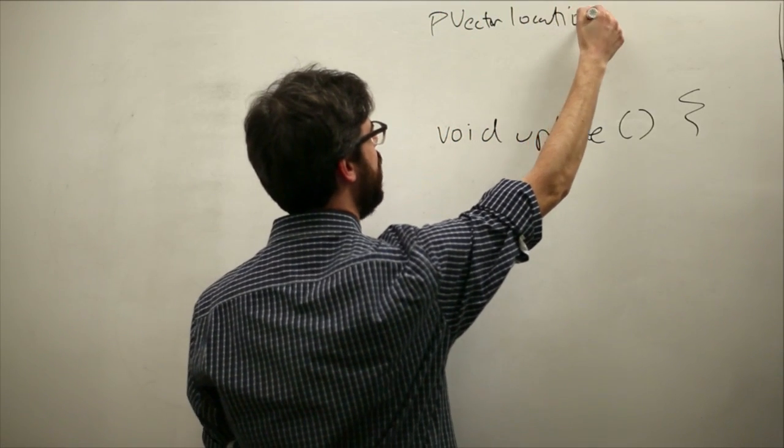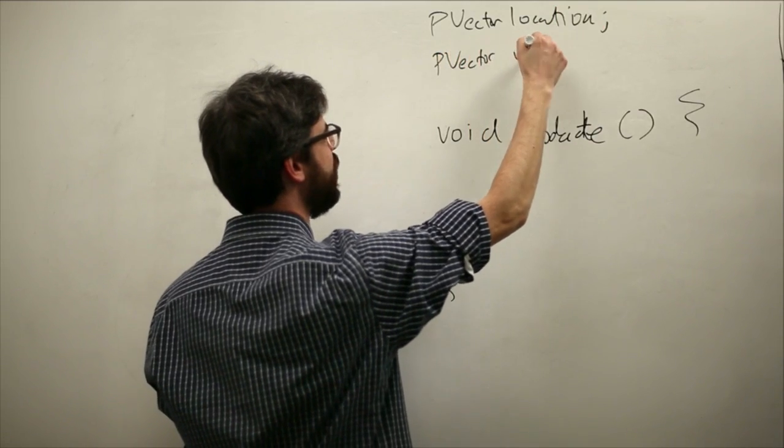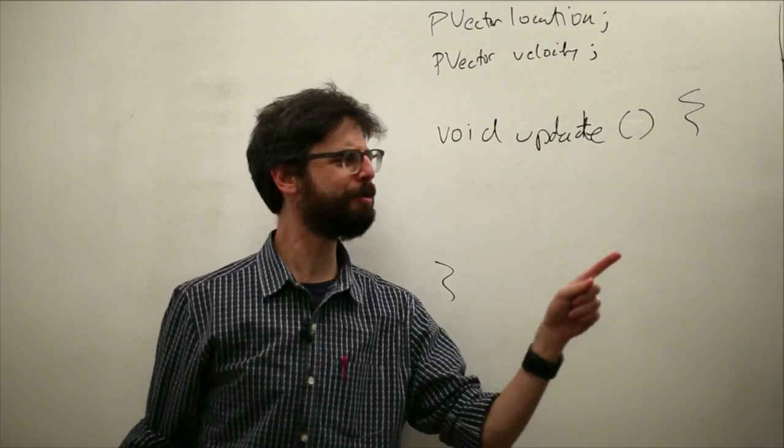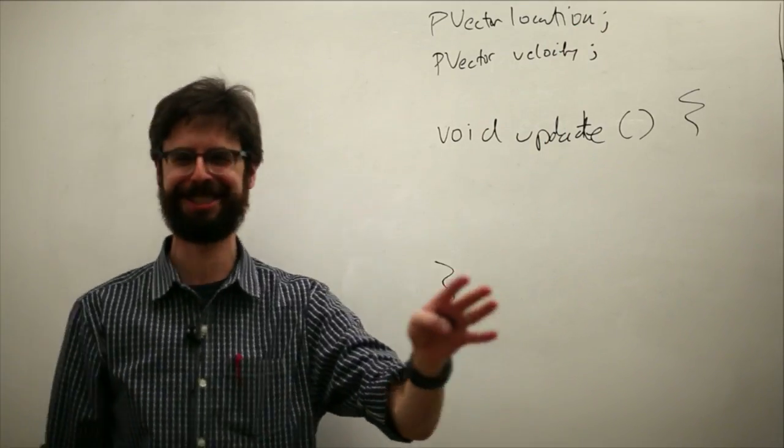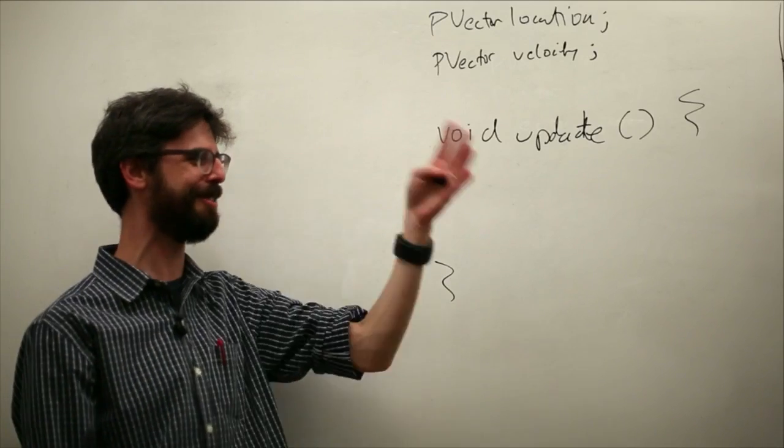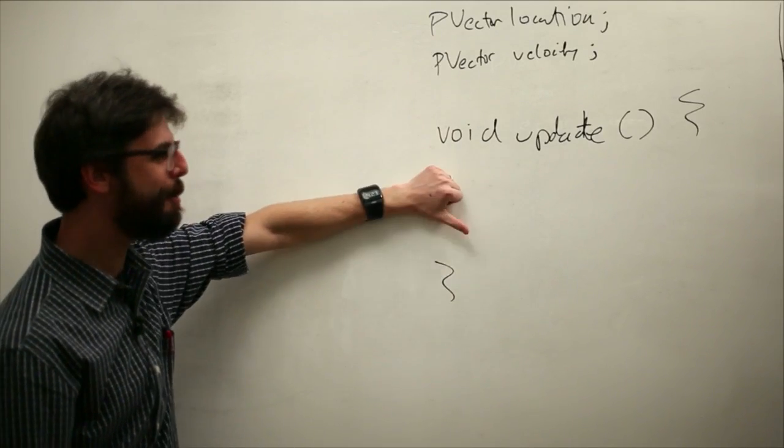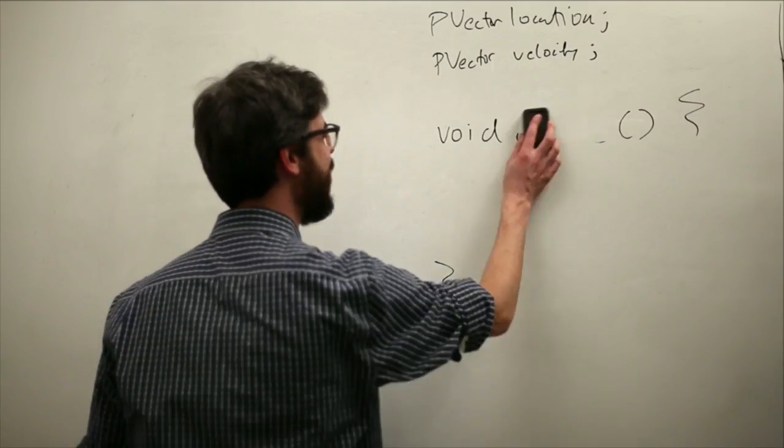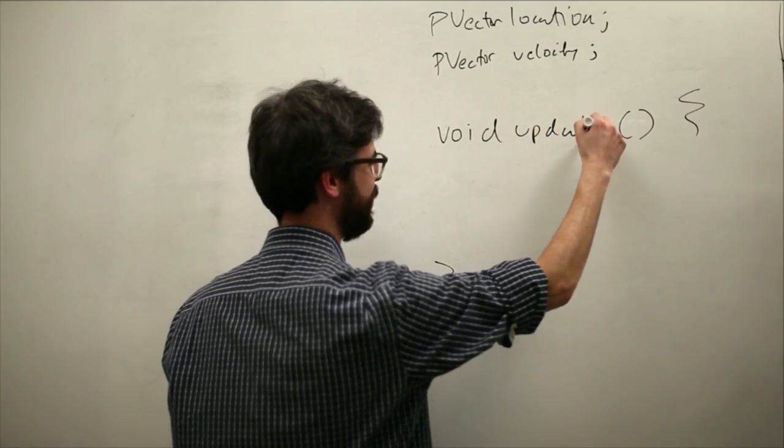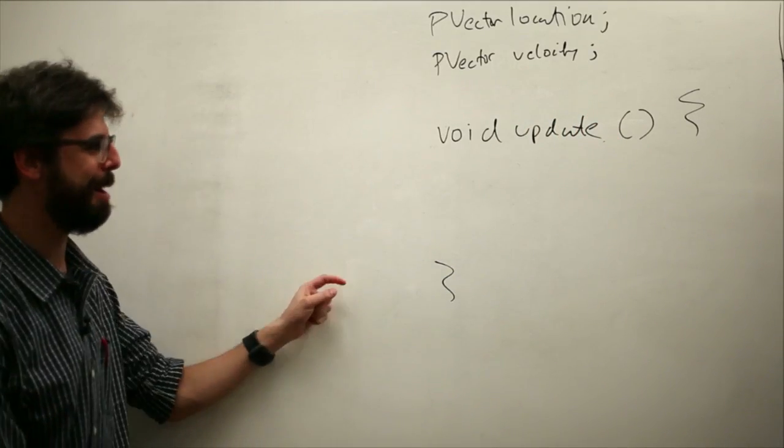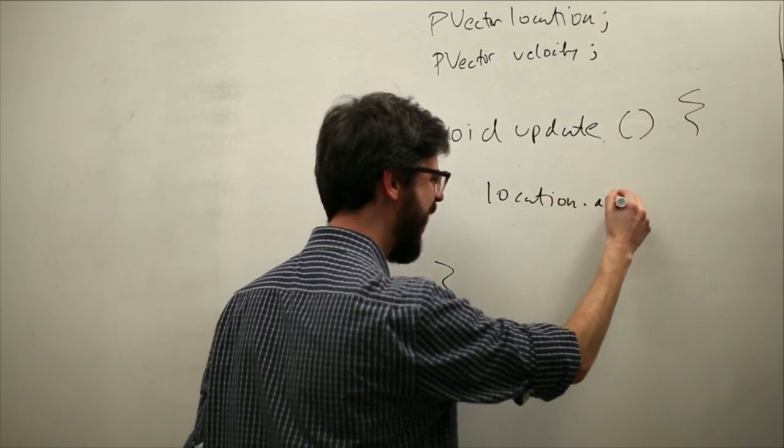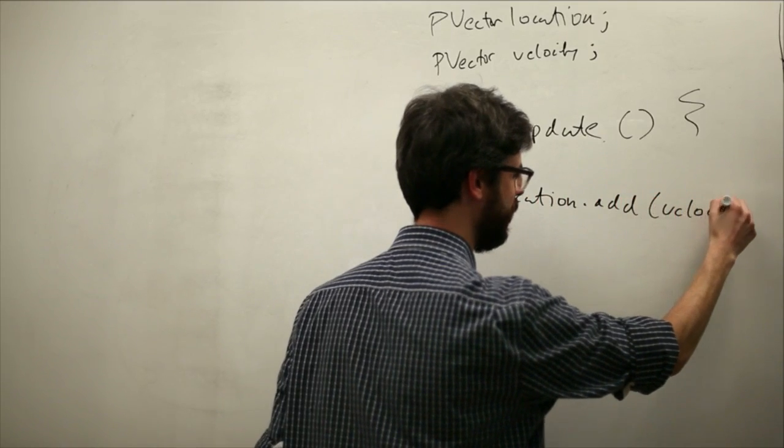We have an object. It has a location vector. It has a velocity vector. It's very late in the day. I have this rule to record these videos in the morning when my brain is working and I feel energized, but stuff's got to get done. Okay, we have an update method. What do we do in that update method?